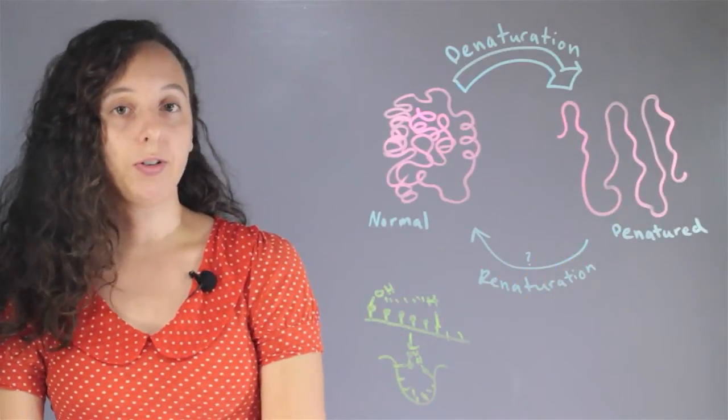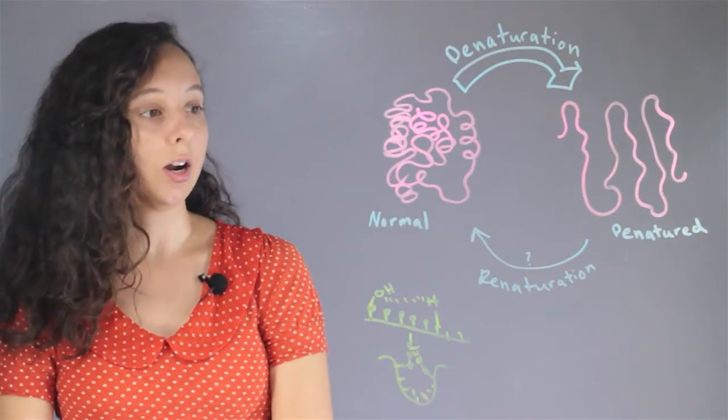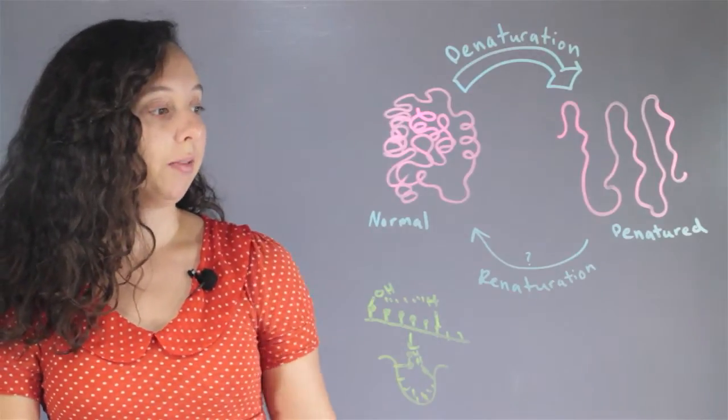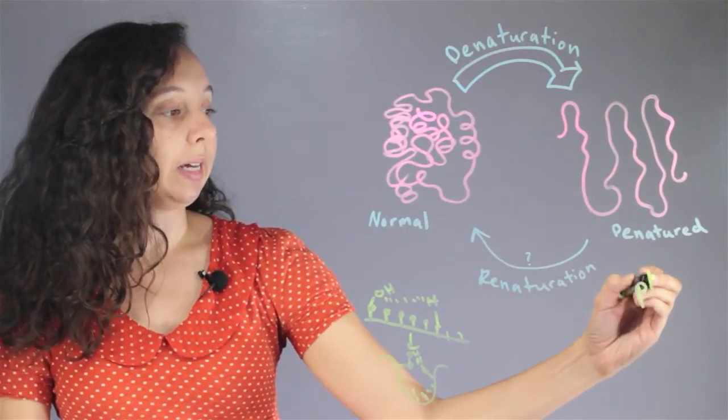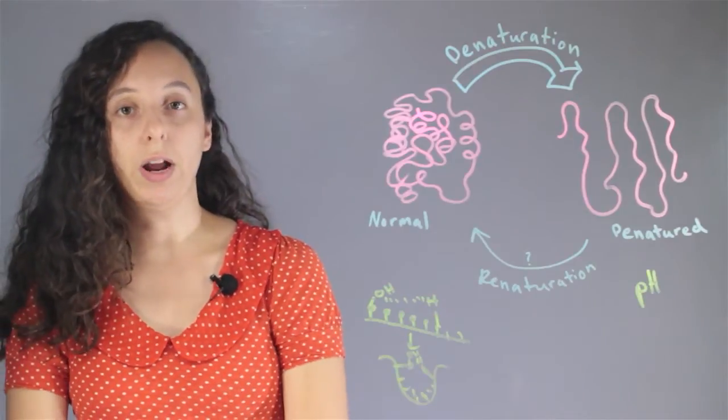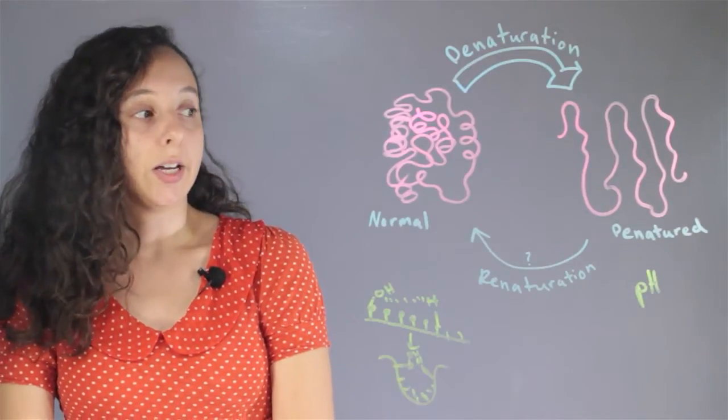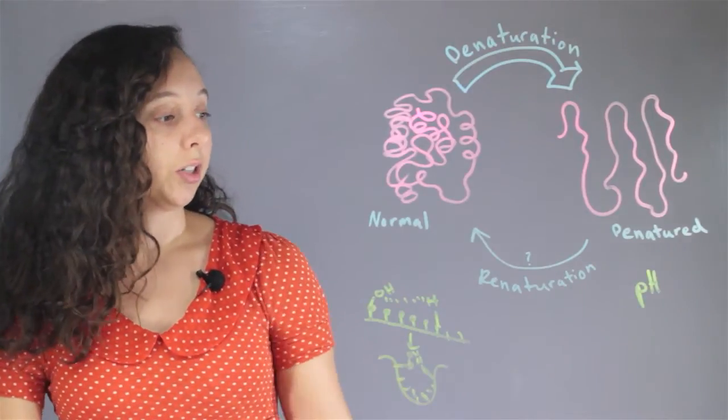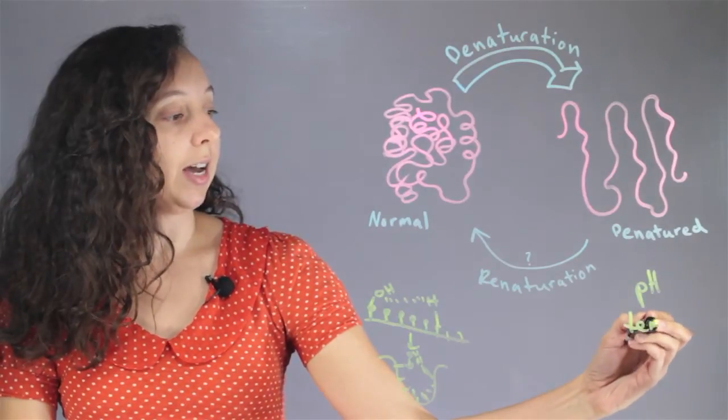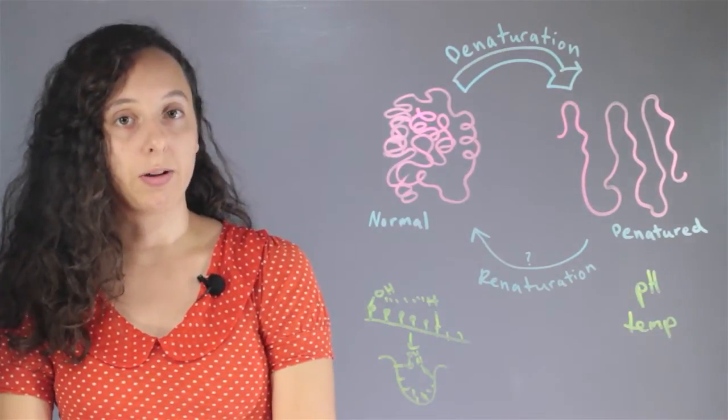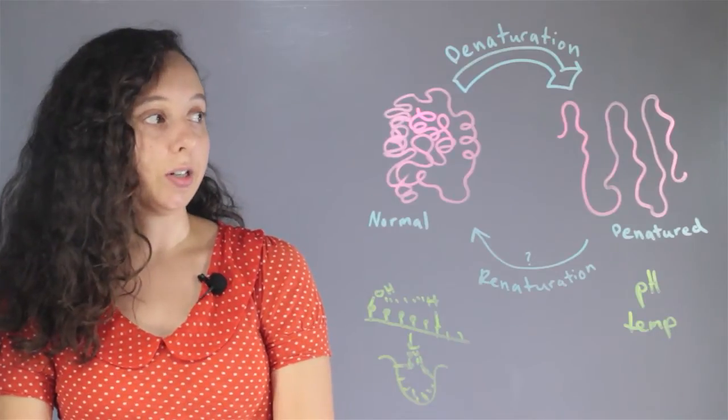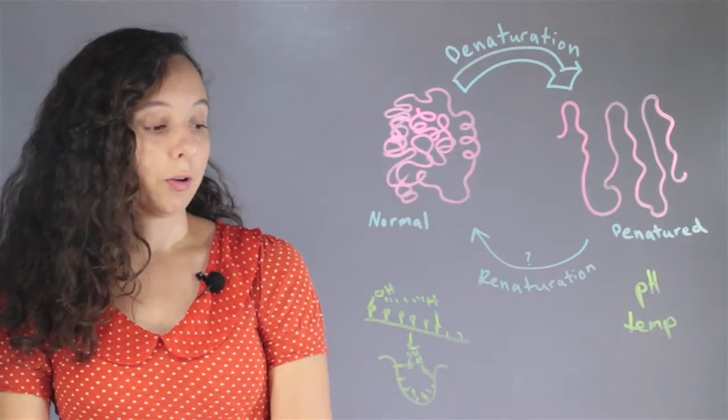And so there's a bunch of different ways to denature a protein or an enzyme. One of them is pH. If you just make something way more acidic or way more basic than it should be, it'll get denatured. Also temperature—if you heat something up way above or cool it down way below what it should be, it'll denature itself. And there's a couple other ways too.